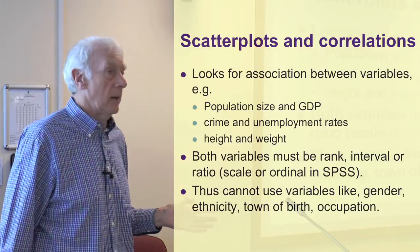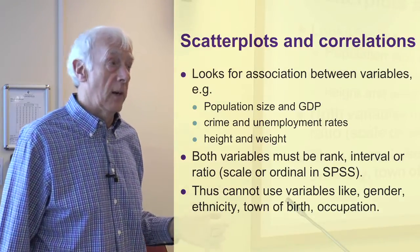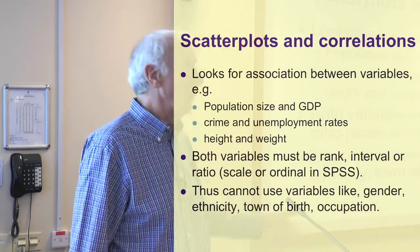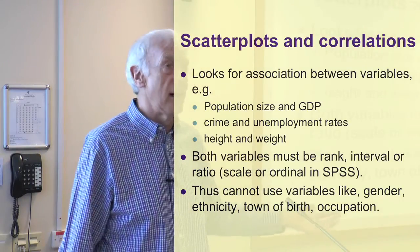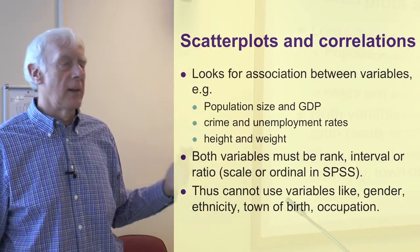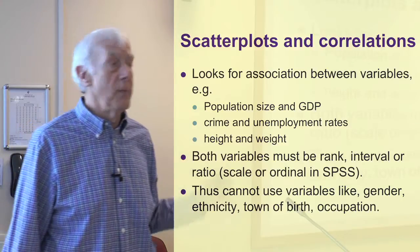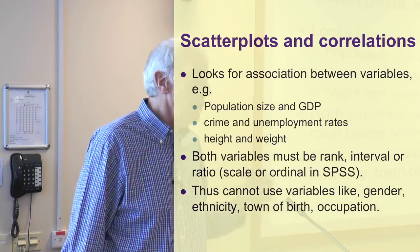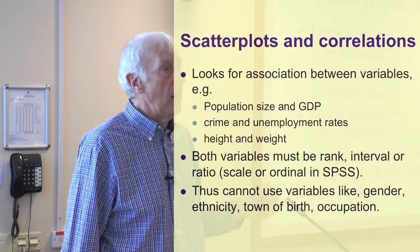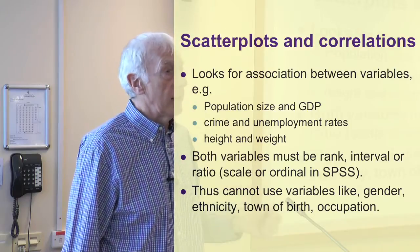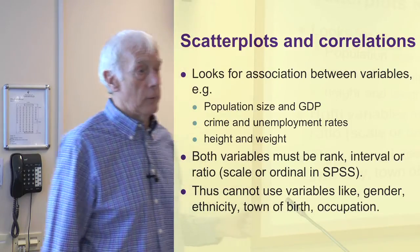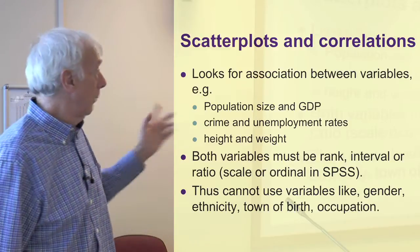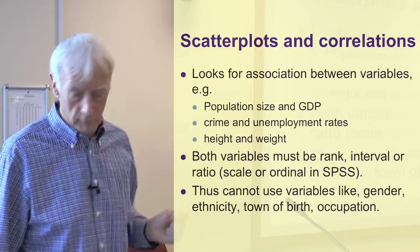Remember, SPSS will generate a scatter plot for you even if you put in those inappropriate variables, but it won't make any sense. You have to know what you're doing and remember that categorical variables can't be used in scatter plots and correlations — it has to be rank, interval, or ratio.